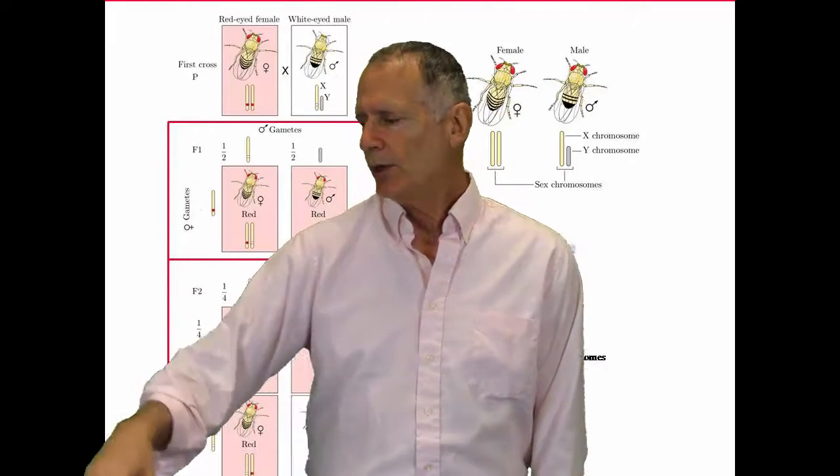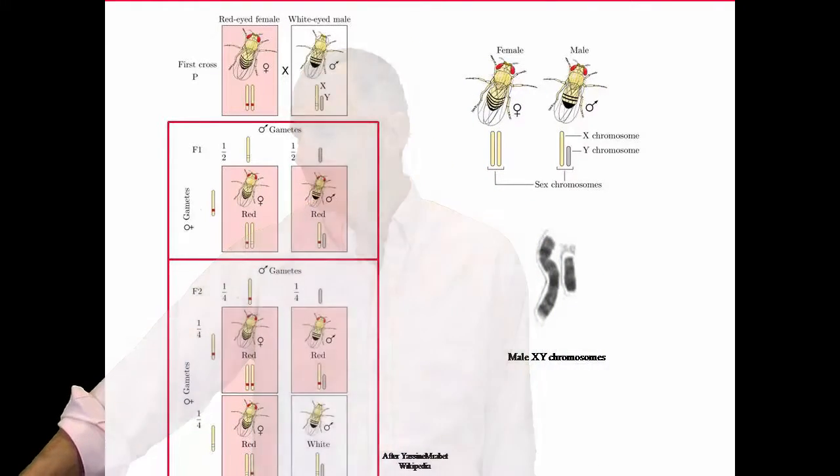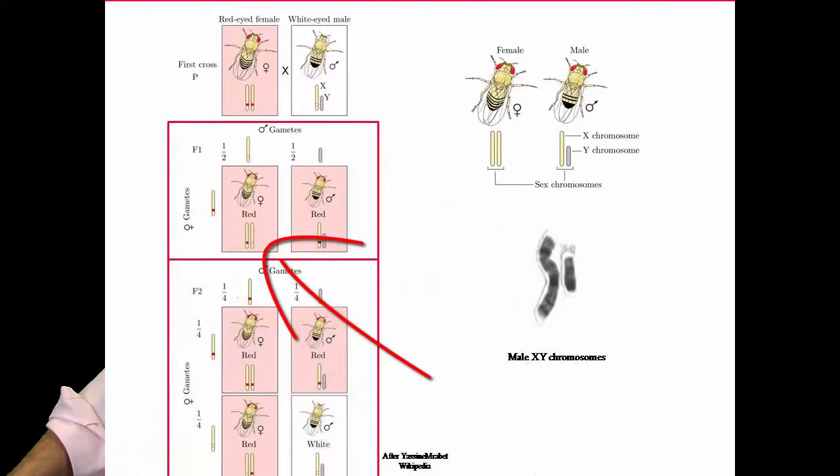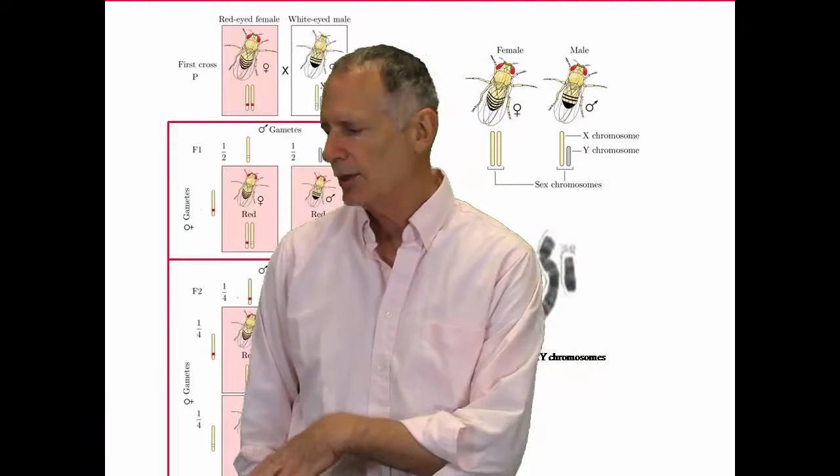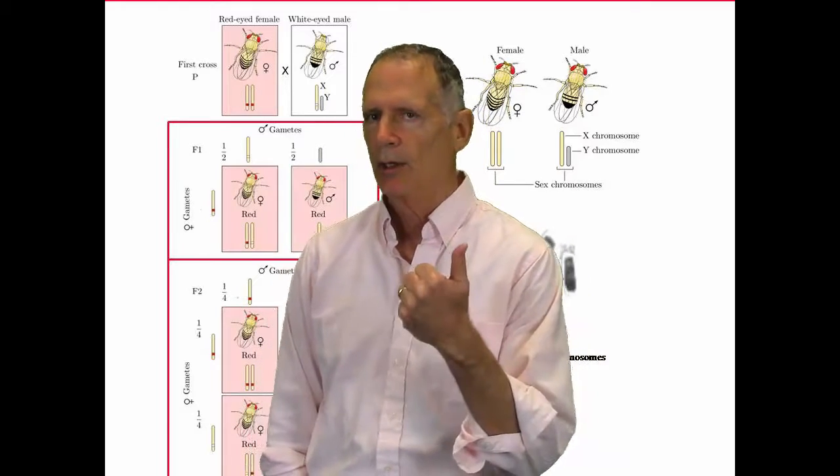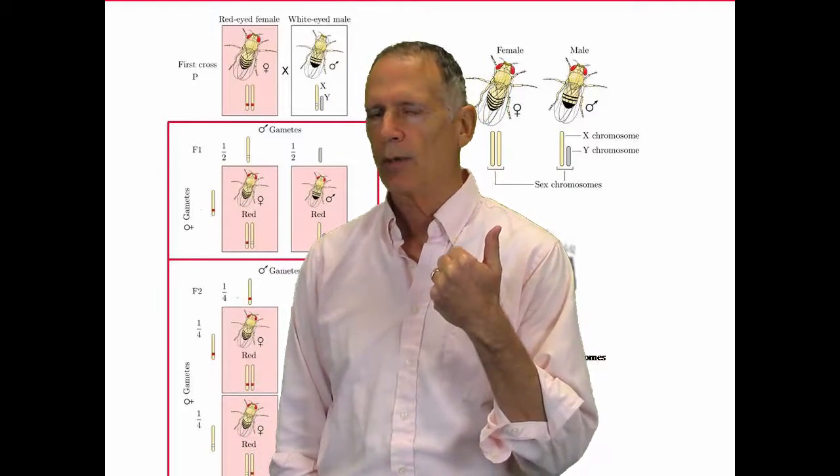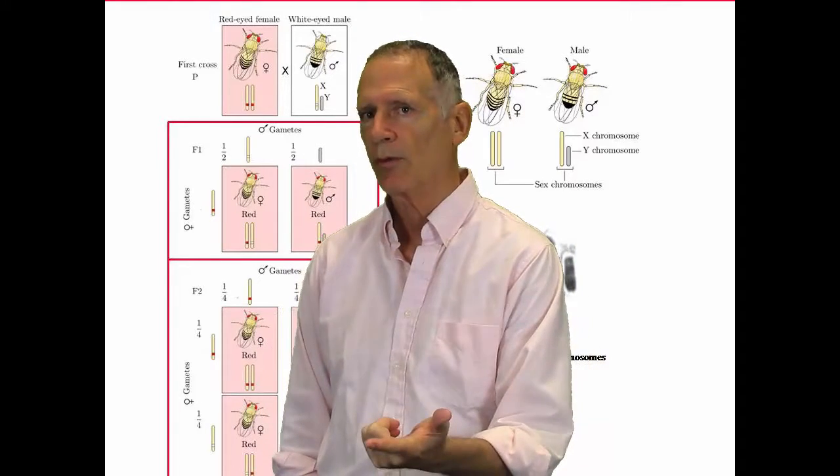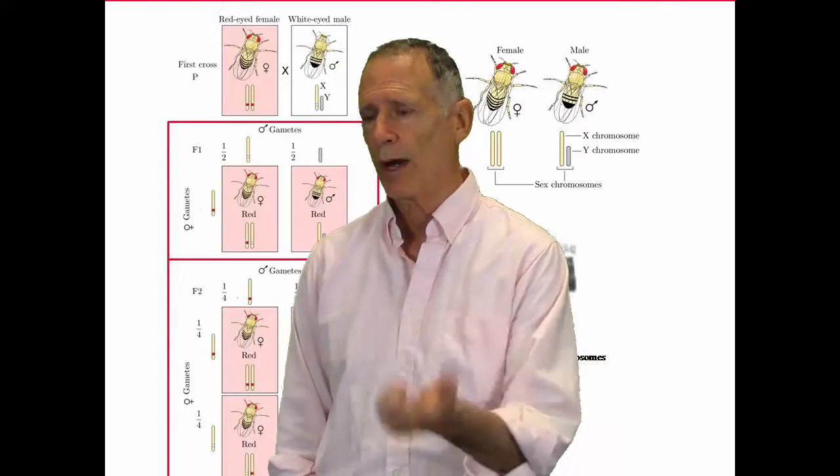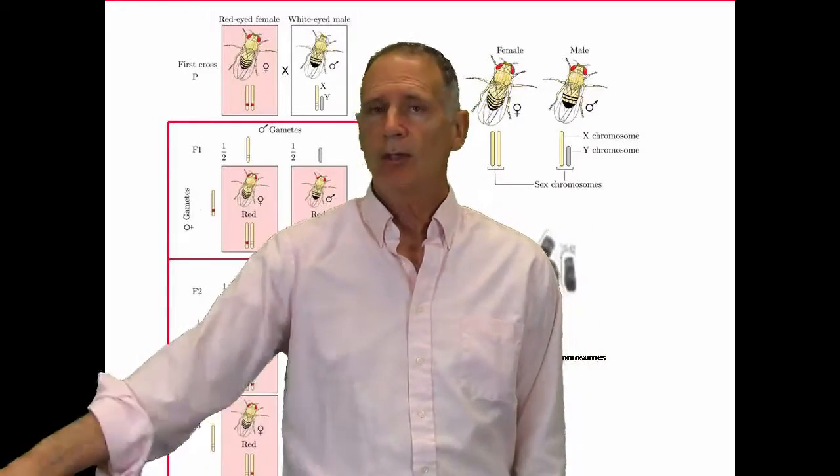So when you pass this on, you're going to get females with a red eye, 50%, and you're going to get a red-eyed male, 50%. That red-eyed male is also going to have a Y chromosome with no trait on it, whereas the X chromosome in the female, they're going to have a red dominant and an X chromosome with white recessive on it. So the eyes are actually going to be red.